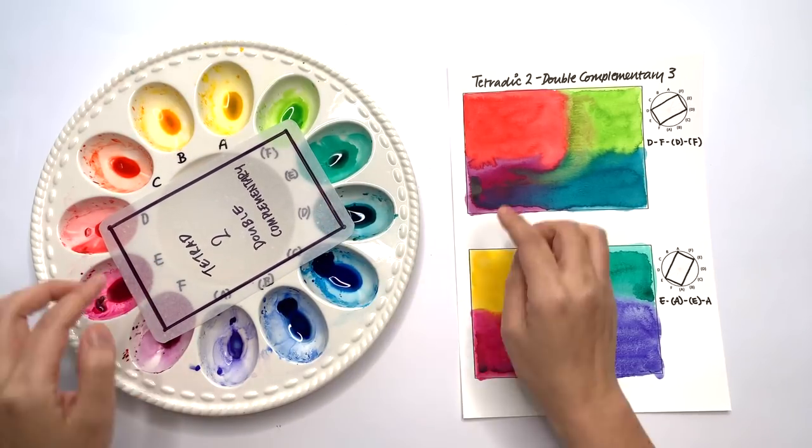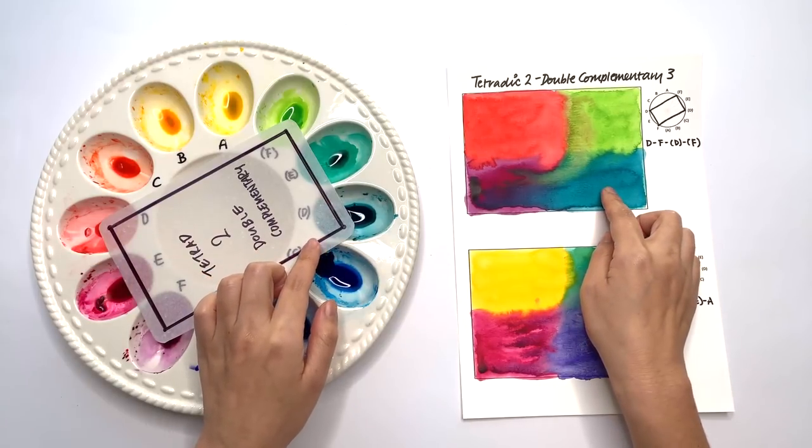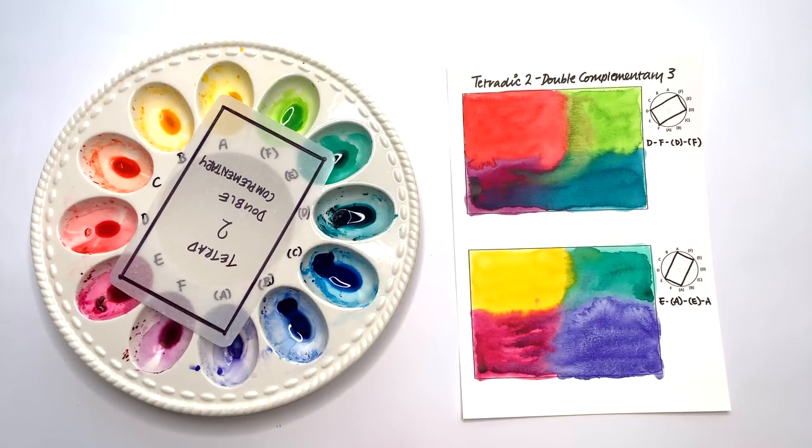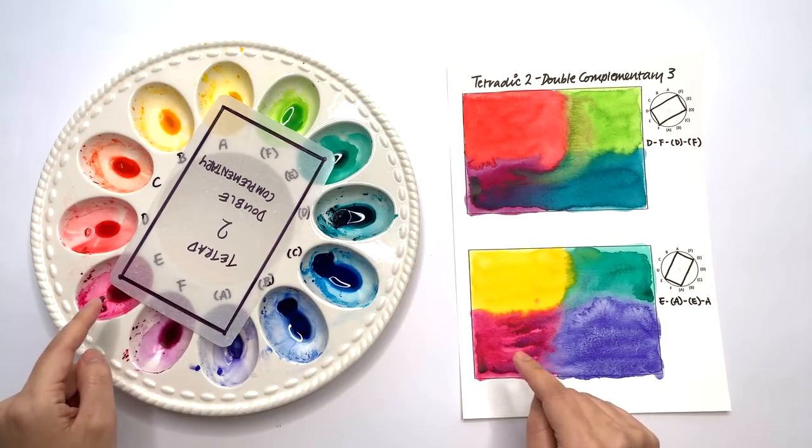Which gives us the D pairs along with the F pairs. And then finally we have the E pairs here.